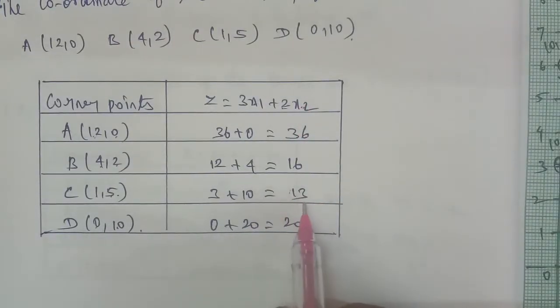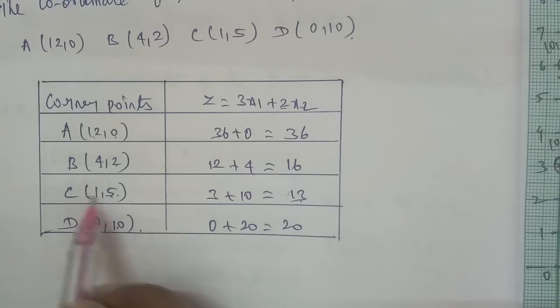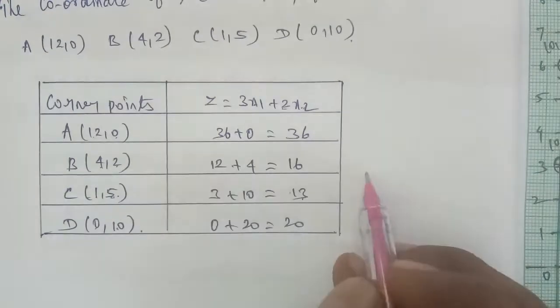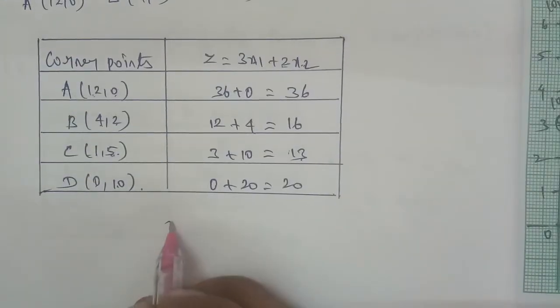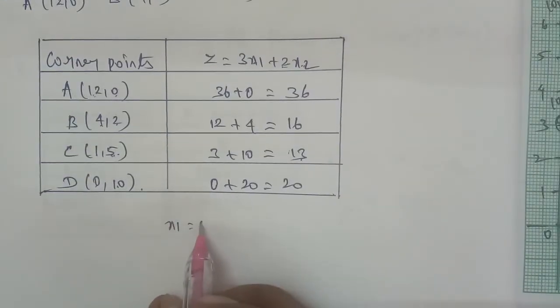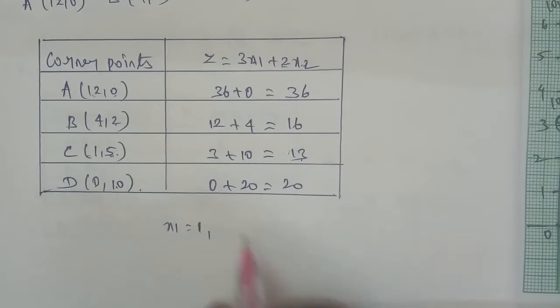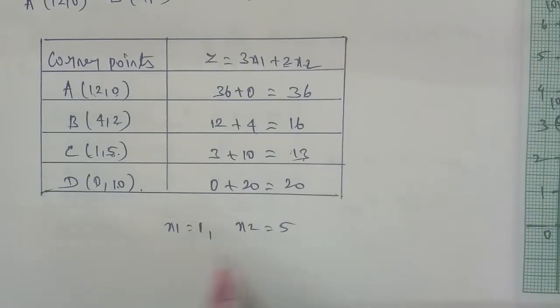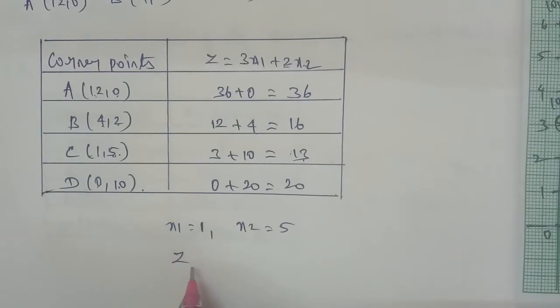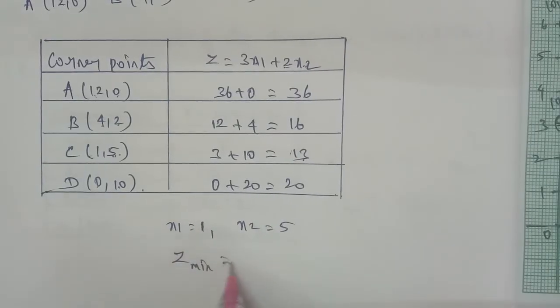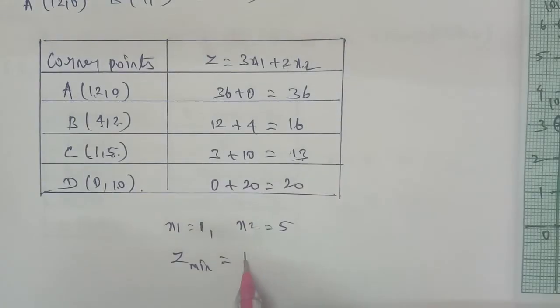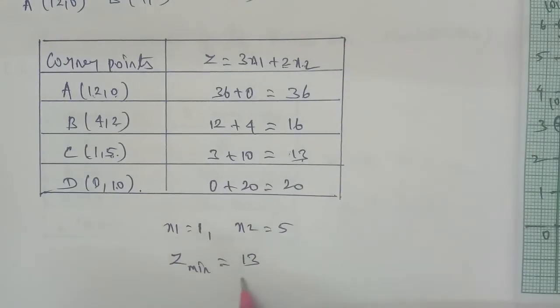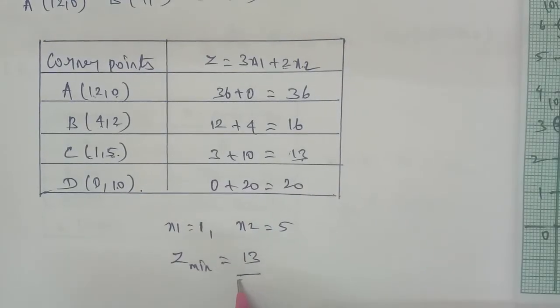The minimum value is 13, at point C where x1 is equal to 1 and x2 is equal to 5. Therefore, Z minimum is equal to 13. This is the answer.